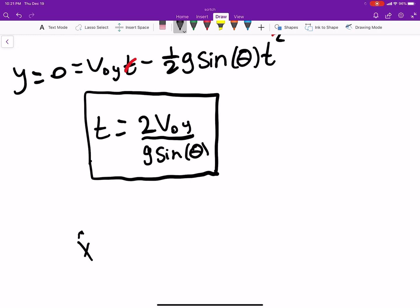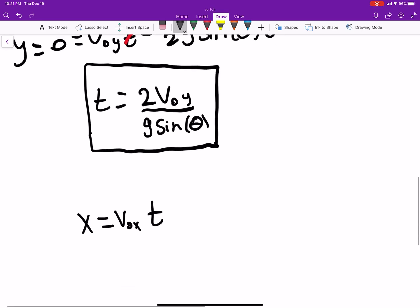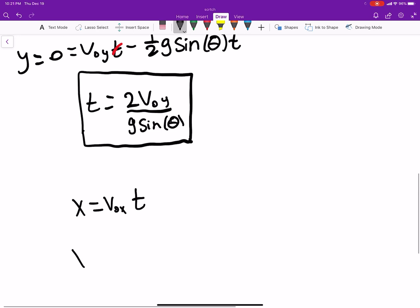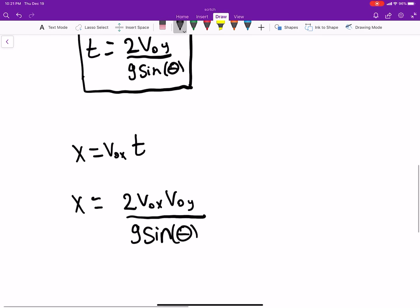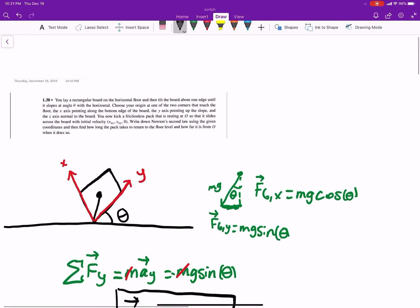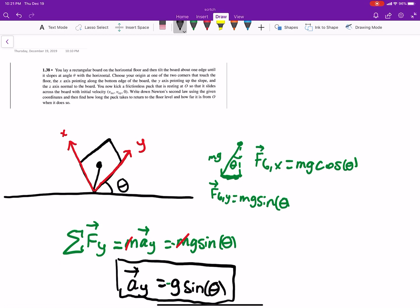And we know that the x component is going to be equal to the velocity in the x direction times time, and we know how long it takes to get there. So x is equal to two v naught x v naught y all divided by g times sine of theta. So this is the time t that we found for it to return back to the ground or ground level.